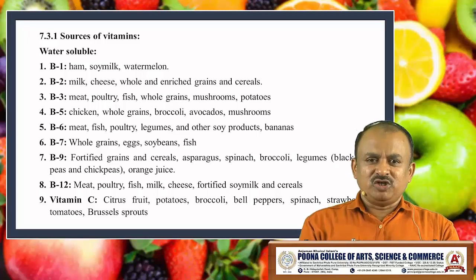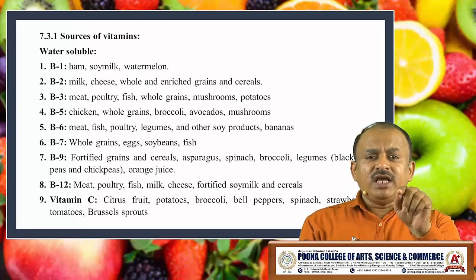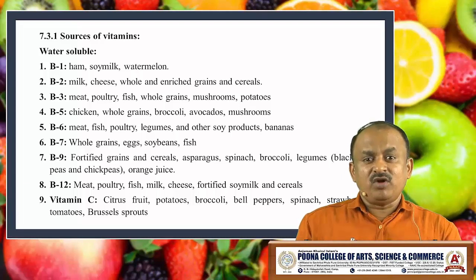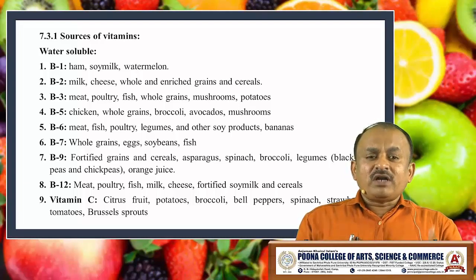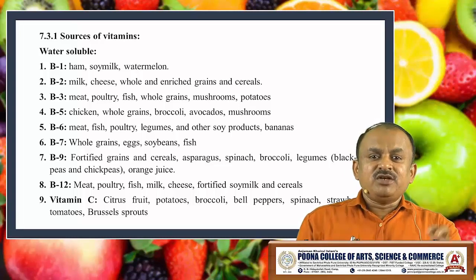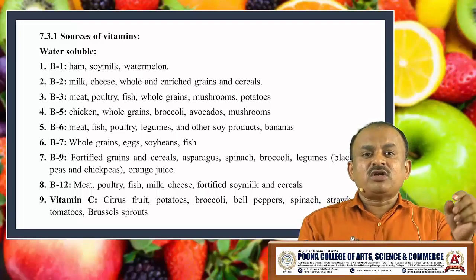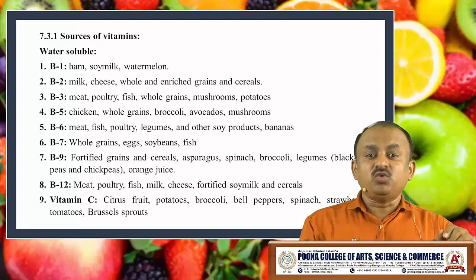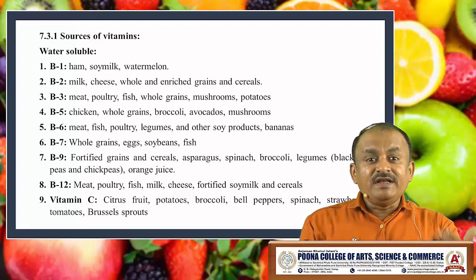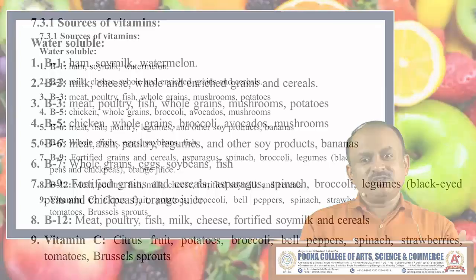Now we know what a vitamin is, the definition and classification of vitamins. If you are facing vitamin B1 deficiency, the sources of vitamin B1 are ham, soy milk and watermelon. As far as vitamin B2 is concerned, if a doctor recommends you have a deficiency of vitamin B2, you have to increase your intake of milk, cheese, whole and enriched grains and cereals.